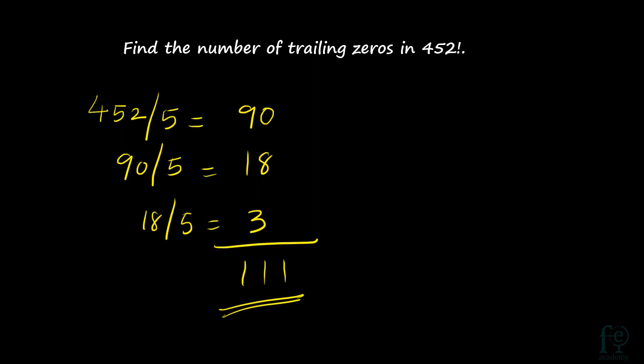So any number you can easily find out. Just keep on dividing by 5 until you get an answer which is less than 5, then add all those results and you will get the number of trailing zeros. Thank you for watching.